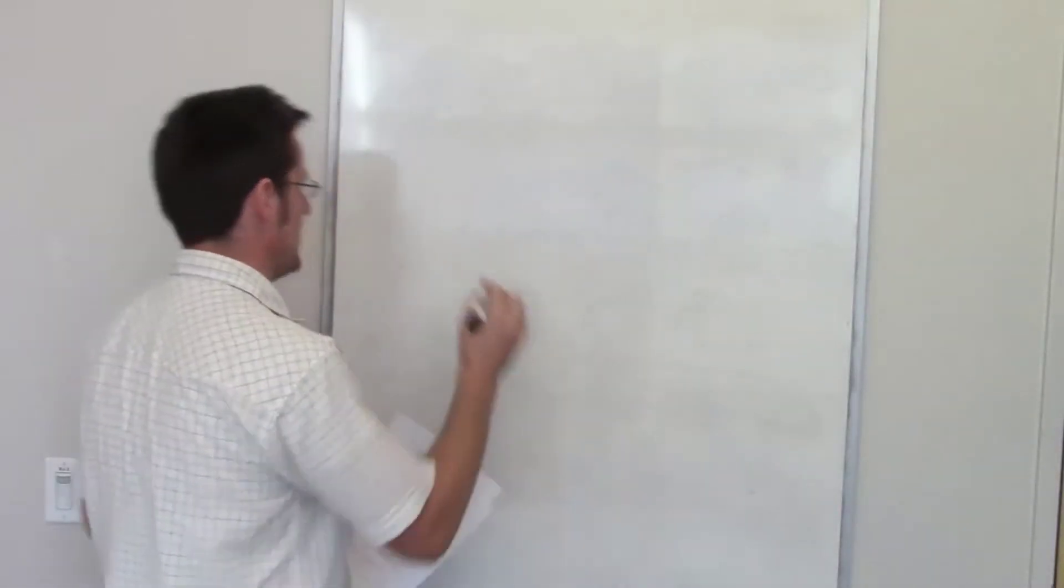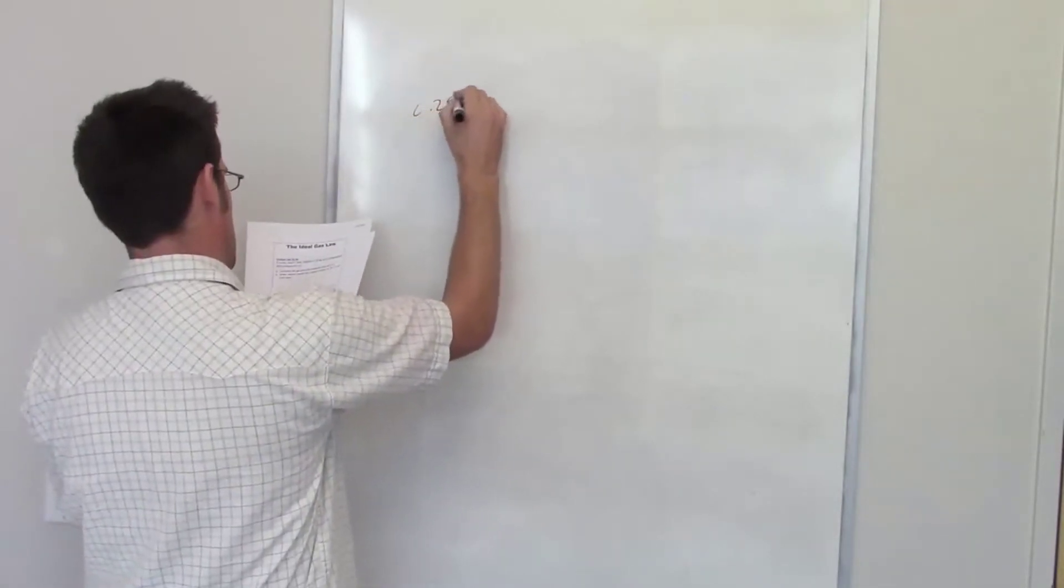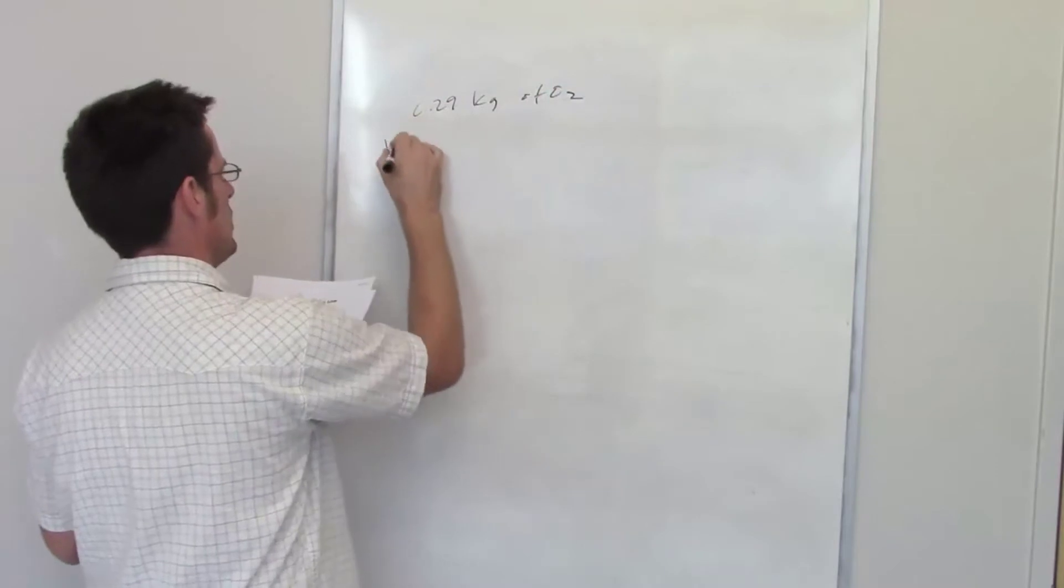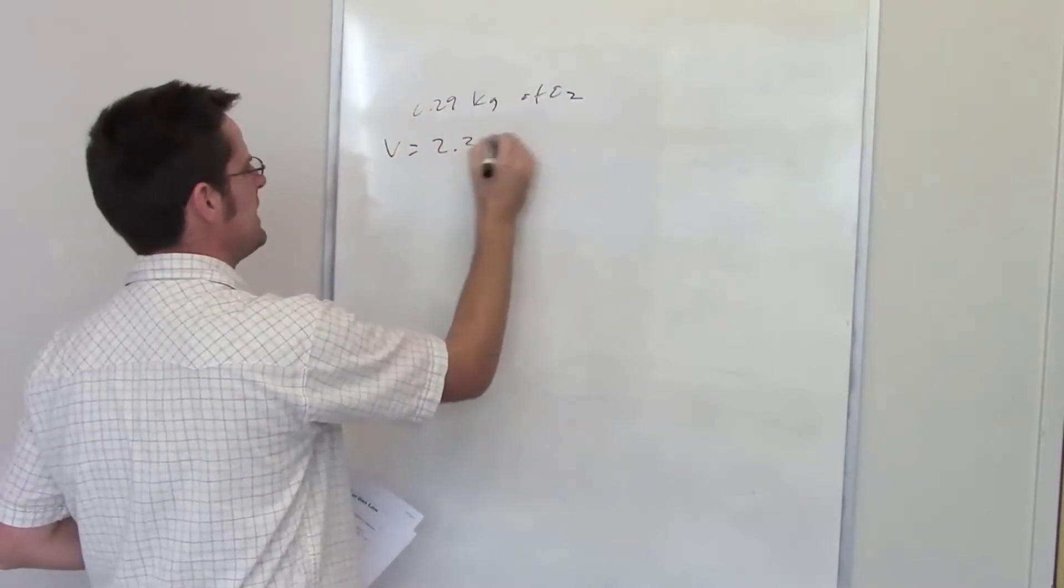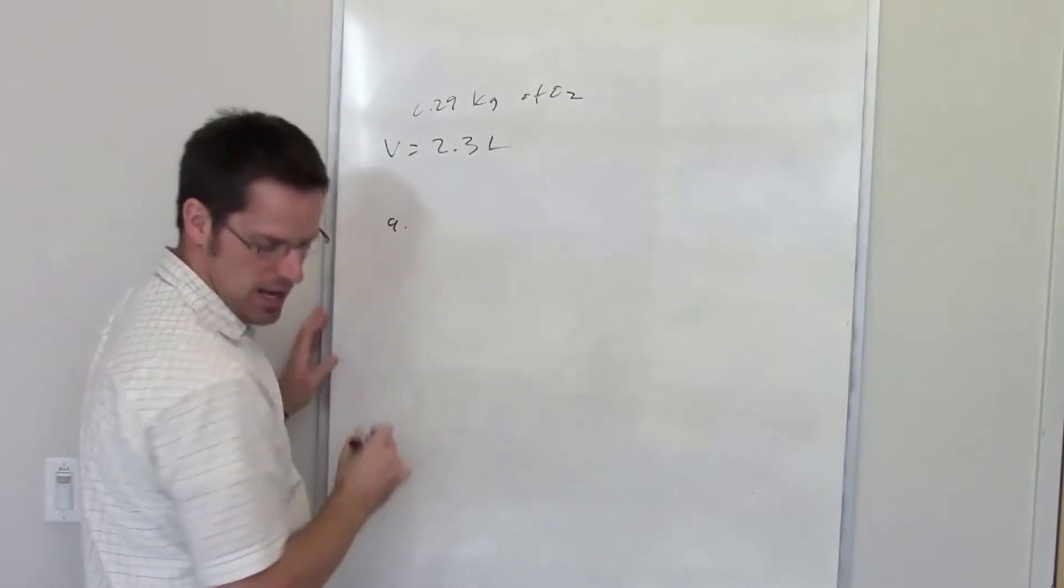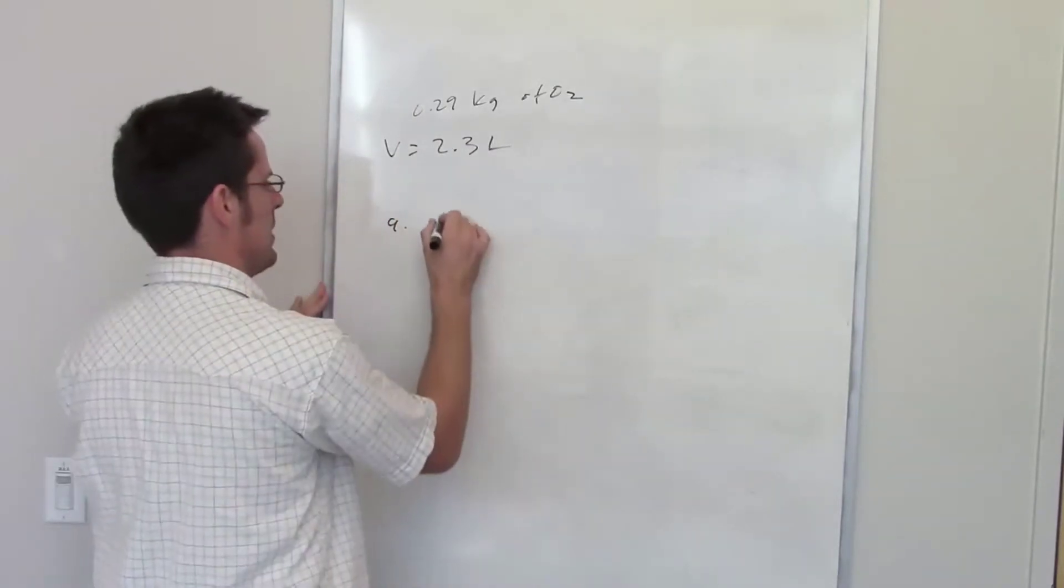This question tells us that a scuba diver's tank contains 0.29 kilograms of O2 compressed into a volume of 2.3 liters. It asks us two things. Part A says calculate the gas pressure inside.